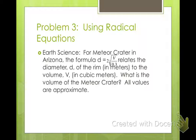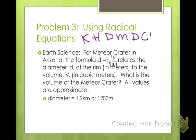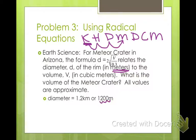Here's an applied problem. For a meteor crater in Arizona, the formula D equals 2 times the cube root of V divided by 0.3 relates the diameter D of the rim in meters to the volume V in cubic meters. We're given that the diameter is 1.2 kilometers. Remember King Henry Died Monday Drinking Chocolate Milk for metric conversions — kilometers to meters means moving 3 decimal places to the right, so that's 1,200 meters. Once we convert to meters we can plug that into our equation.